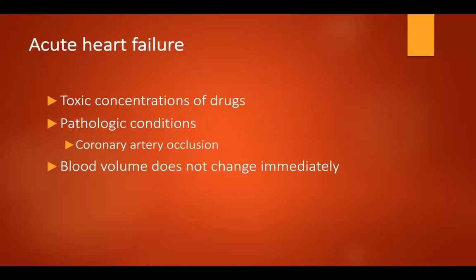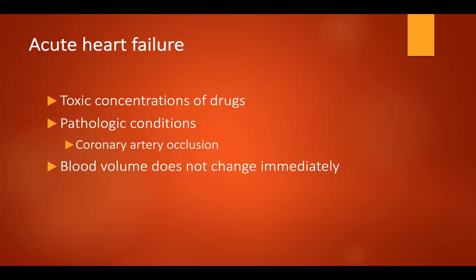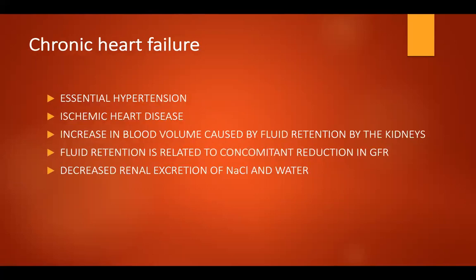For acute heart failure, it is usually caused by toxic concentrations of drugs, especially in patients who use methamphetamine. The ones affected are the contractility, or the ejection fraction of the heart. Drug users usually develop dilated cardiomyopathy. Another example of acute heart failure is coronary artery occlusion, or acute coronary syndrome, more commonly known as myocardial infarction. Blood volume does not change immediately, but eventually the patient will develop anemia because of increased VO2 consumption of the heart due to heart failure.